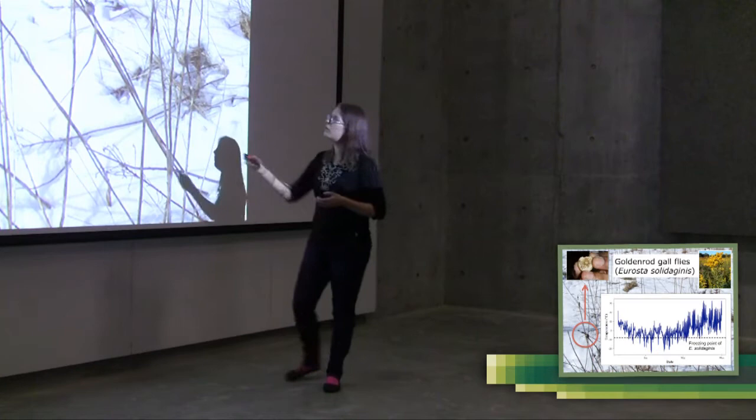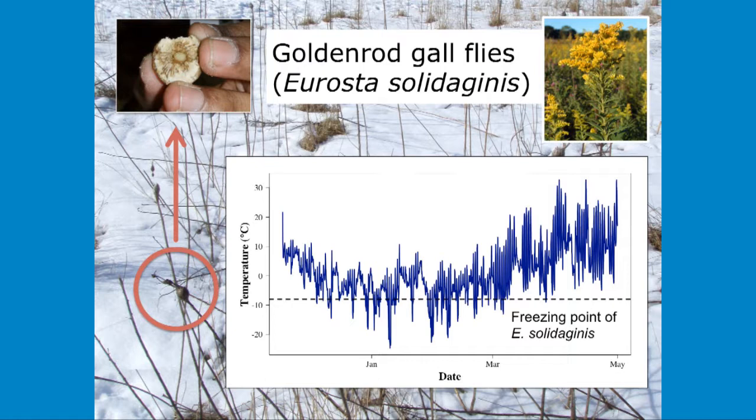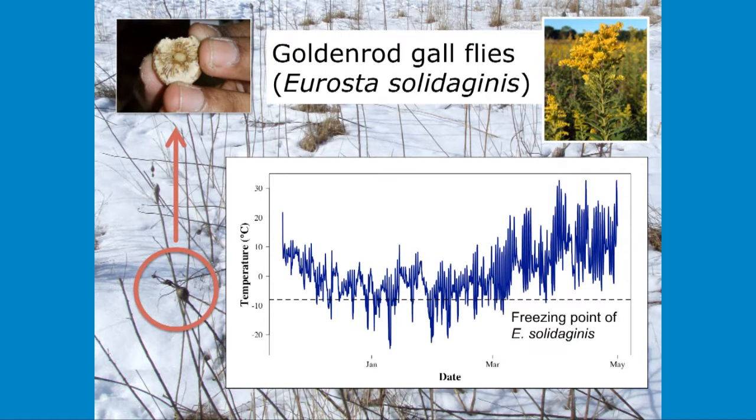Within these plants, these are goldenrod plants that have died over the winter. This is the normal part of their life cycle. And within these plants, you can see these little balls. Within each one of those little balls is a goldenrod gallfly.